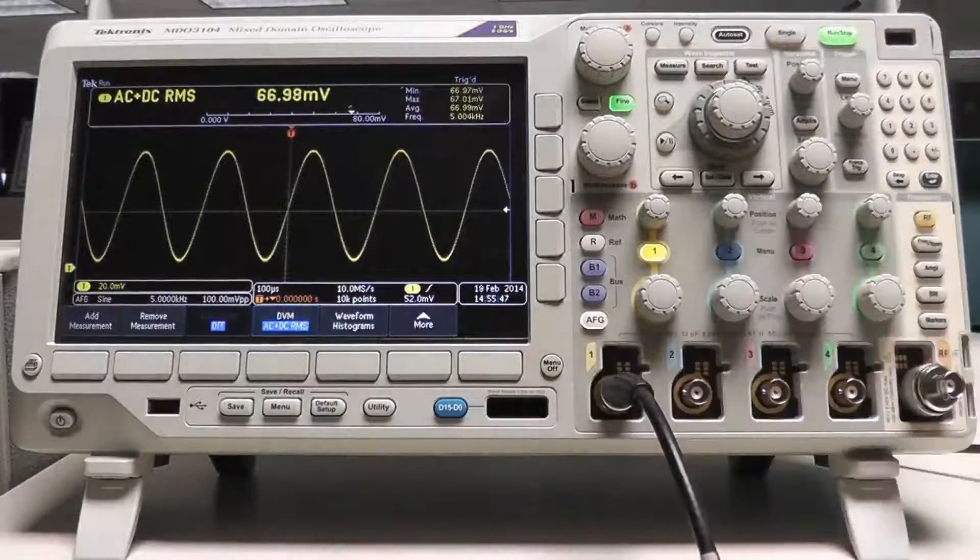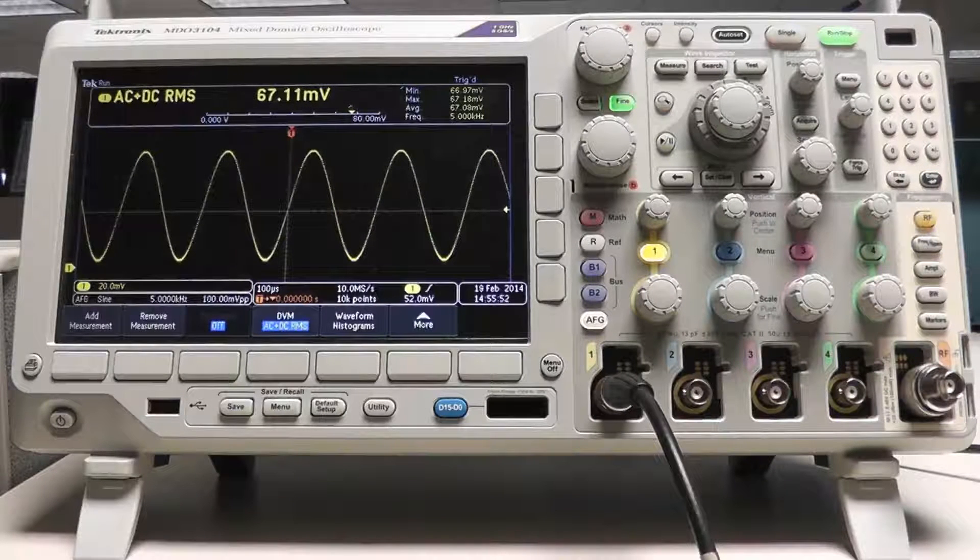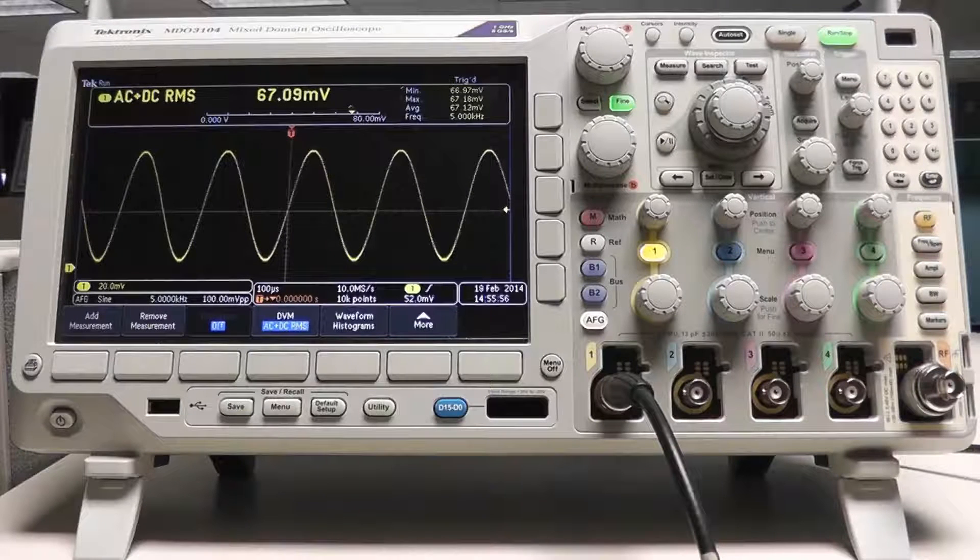To measure the AC and DC RMS value of the signal, scroll once again to the option in the DVM menu. This function takes a true RMS measurement of the waveform, including the DC offset.